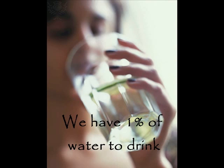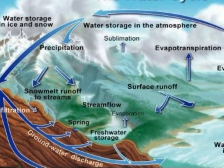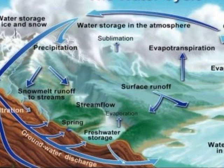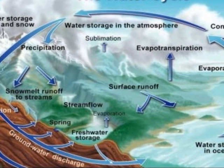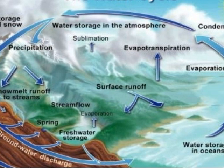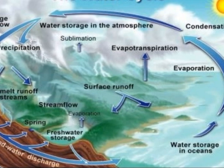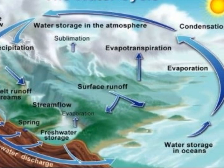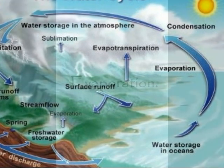Did you know that the water that you bathe in is the same water that rained down 200 million years ago? The water cycle, also known as the hydrologic cycle, is the journey water takes as it moves from sky to land. The water cycle takes four steps to complete.